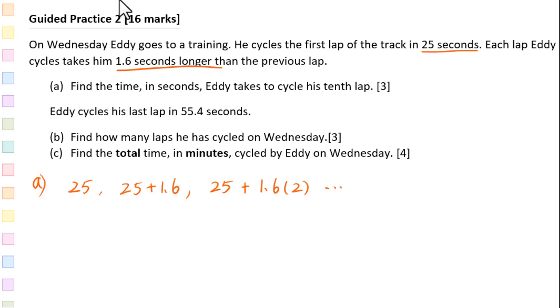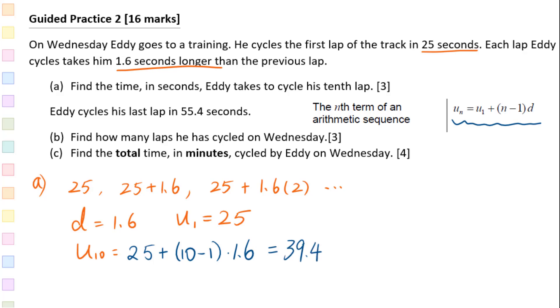This is the arithmetic sequence. We have D equals 1.6, U sub 1 equals 25. We need to figure out U sub 10. Here is the formula for arithmetic sequence. U sub 10 is 25 plus 10 minus 1 times 1.6 equals 39.4 seconds.